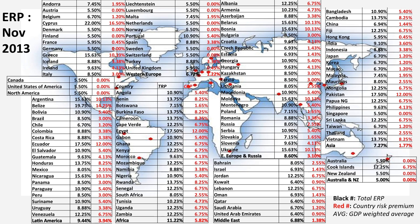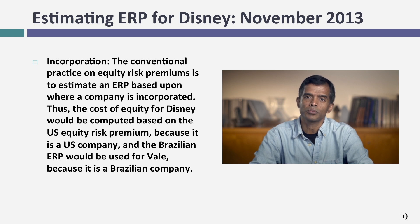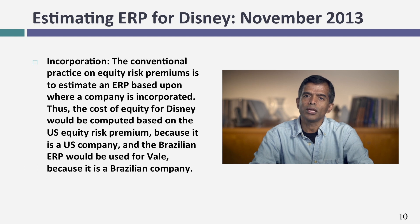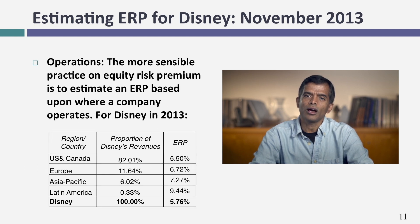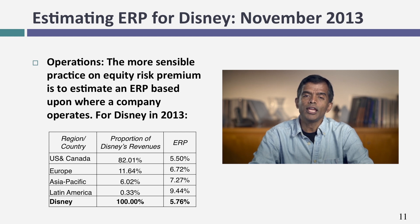Now I'd like to talk about estimating equity risk premiums for companies. I'll start with Disney as my example. Disney is a U.S. company, and you could take the lazy approach of simply using the U.S. equity risk premium — but that's foolhardy. Disney has operations across the globe. In 2013, 82% of its revenues came from the U.S. and 18% from overseas. To estimate Disney's equity risk premium, I gave the 82% U.S. revenues the 5.5% U.S. premium, and for the rest of the world I computed weighted average premiums wherever Disney operates.